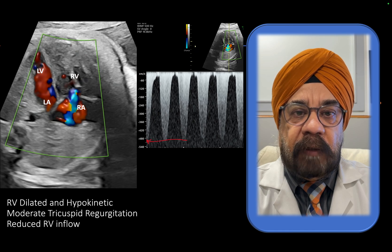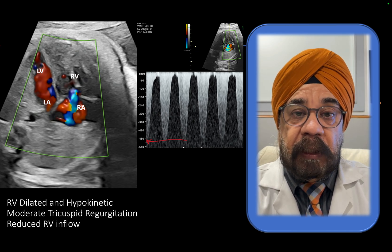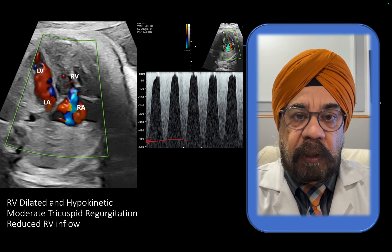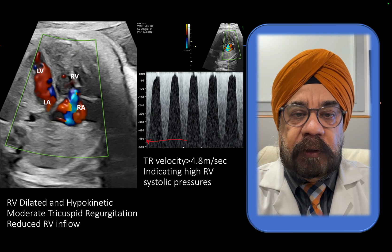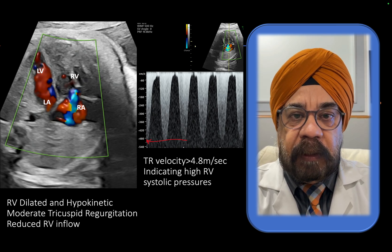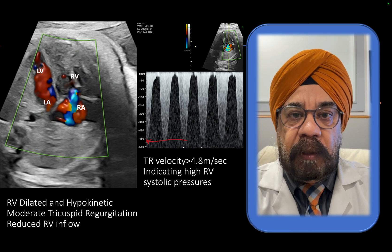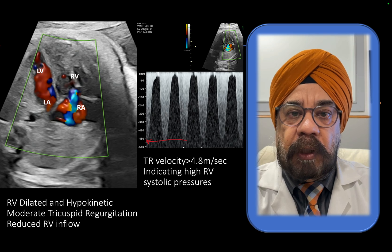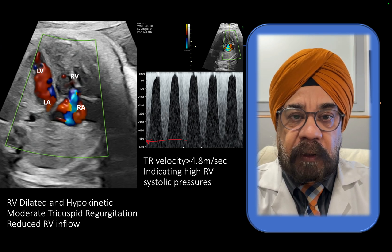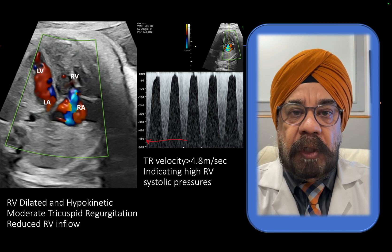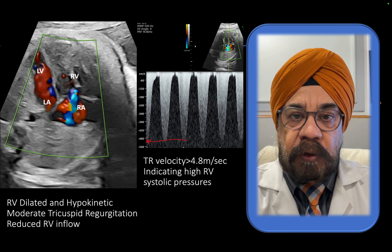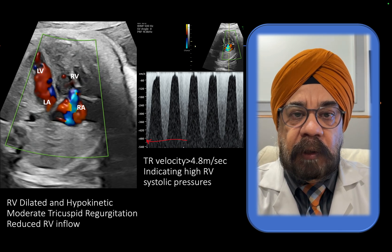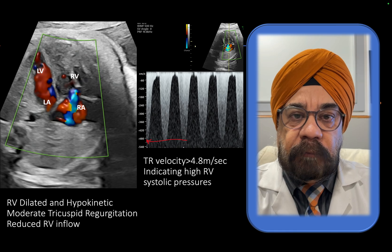Now we get the TR velocity, which is about five meters per second — a very high TR velocity for this gestational age of 30-plus weeks. If you have severe TR with high TR velocity, it indirectly indicates that RV systolic pressures are elevated. This rules out cardiomyopathy of the right ventricle. The RV is generating large systolic pressures, which indicates there is obstruction ahead of the right ventricle.